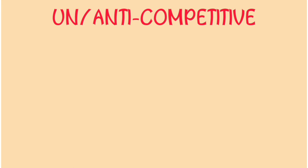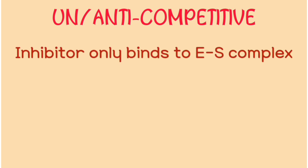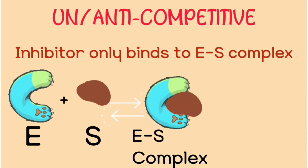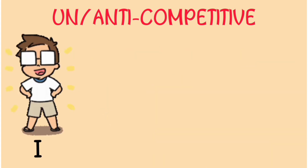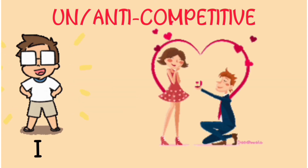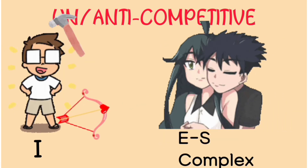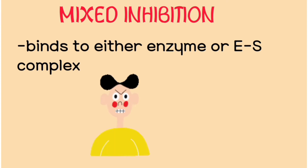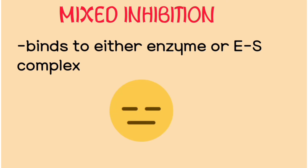The next type is uncompetitive or anti-competitive inhibition. In this case, the inhibitor only binds to the enzyme-substrate complex. We know that an enzyme and substrate first bind to form a temporary enzyme-substrate complex, which then yields the enzyme and product. So this inhibitor doesn't bind to the enzyme when it's free — it waits until the enzyme-substrate complex forms. Then we have the mixed inhibitor, which can bind either to the enzyme-substrate complex or to the enzyme itself.